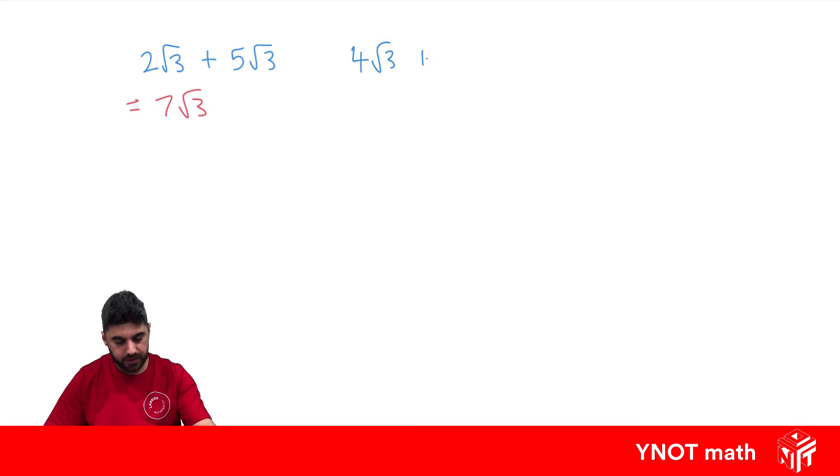4 root 3 plus 3 root 2 will just be 4 root 3 plus 3 root 2 because they're not like surds. We can't add those together.